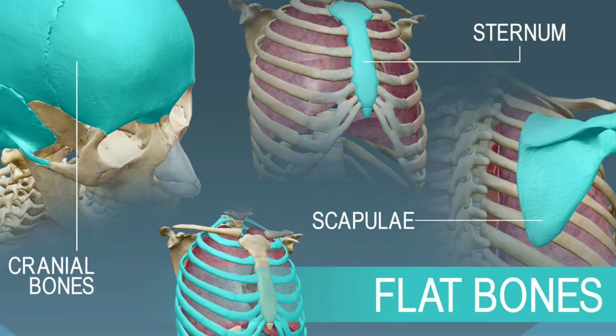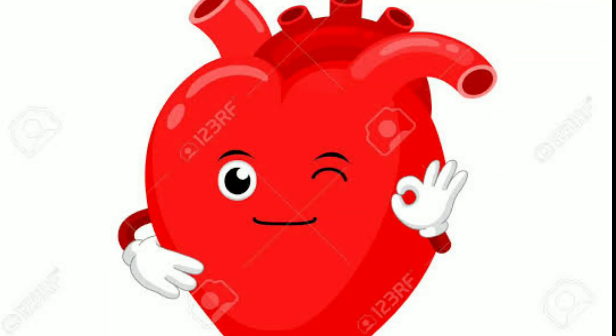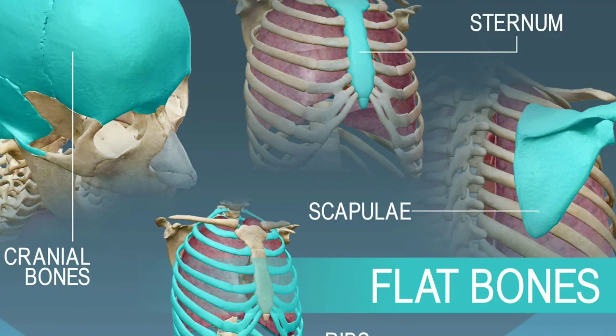The first one is flat bones. Flat bones protect internal organs — the skull, the thoracic cage, and the pelvis. They protect internal organs such as the brain and the heart.